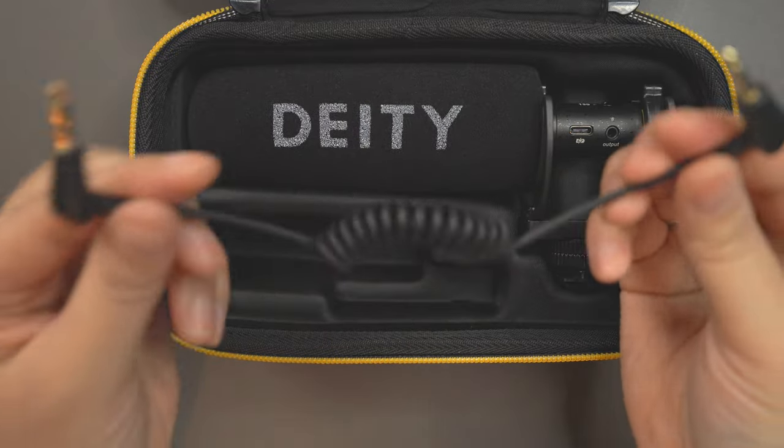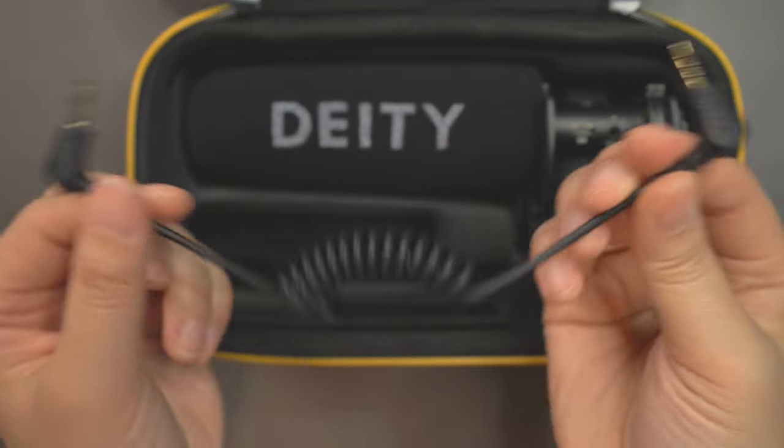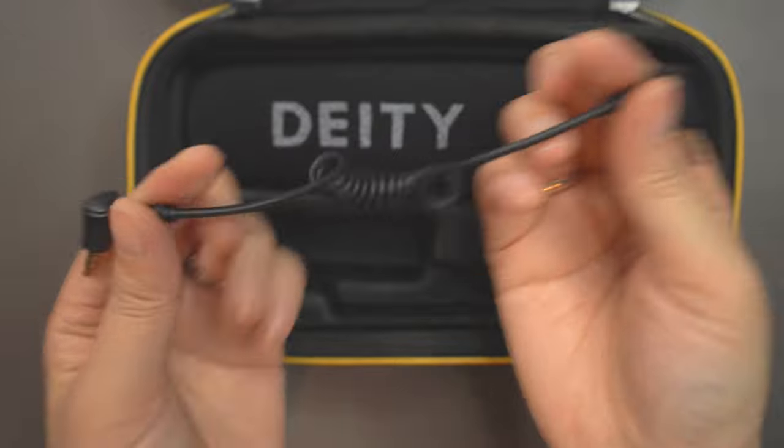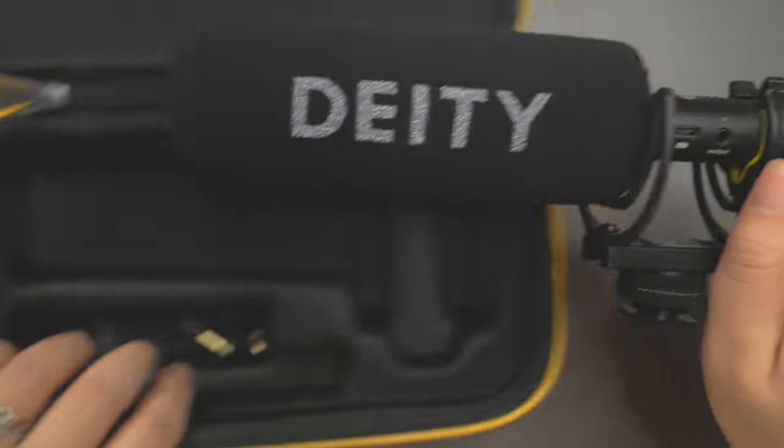The Deity V-Mic D3 Pro is a shotgun mic with a super cardioid polar pattern. It comes with a TRRS to TRRS cable.